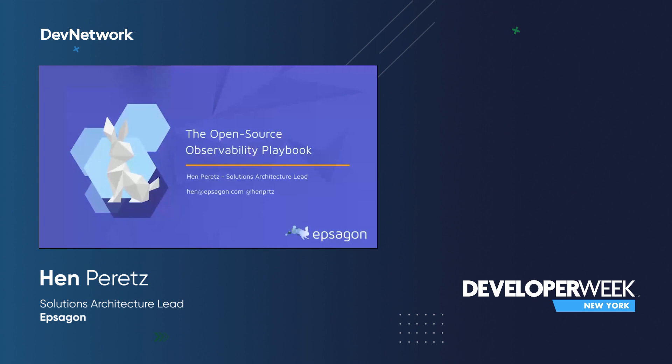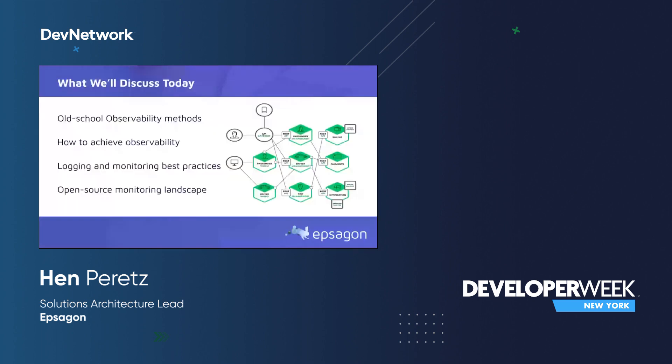What we'll discuss today is, first, track back and see what the old school observability methods look like today. It's kind of funny to call them old school because they're pretty much used by the majority of companies today. Second, I'll show how to actually achieve observability alongside logging and monitoring best practices. We'll also discuss the overall landscape of open source monitoring, and I'd love to get your questions afterward so we can turn that into a discussion.